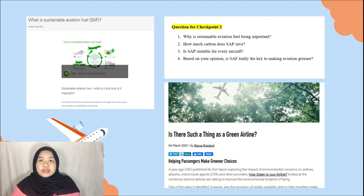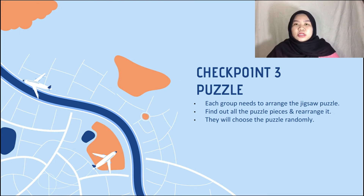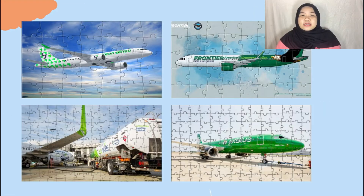After reading the article, they need to answer three to four short questions. Checkpoint number three is puzzle. Each group needs to rearrange the jigsaw puzzle. They need to find each puzzle piece and rearrange it. These are the puzzles we prepared for this checkpoint.